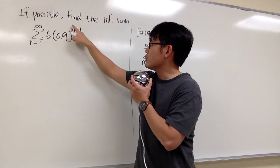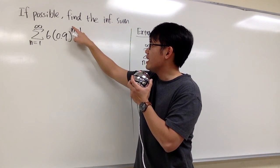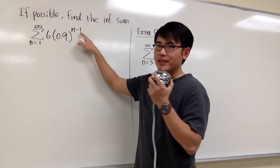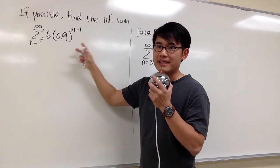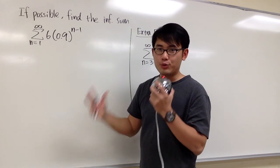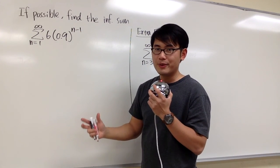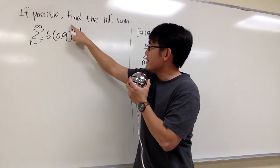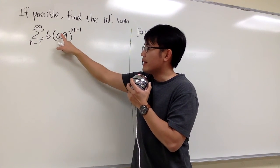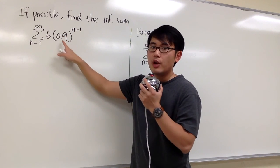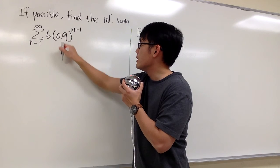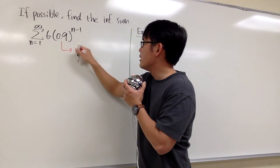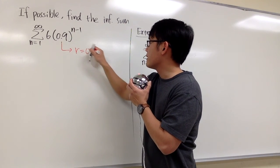Also, because we only have n, the minus 1 doesn't really matter — it does not affect the common ratio. Based on this n and the number 0.9 in the parentheses, we know that the common ratio is going to be 0.9.